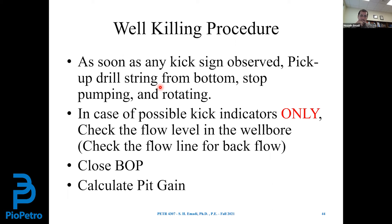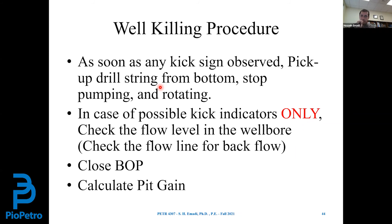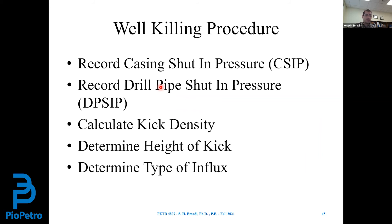After successfully closing the BOP, we check the flow line to confirm the BOP is functioning properly and sealing the annulus. Then we calculate the pit gain — how much volume of mud came back to the mud pit — which tells us how much formation fluid entered the wellbore. Then we start recording casing pressure to calculate the casing shut-in pressure. We have one gauge on the annulus — casing or choke pressure — and one at the surface on the rig floor — the standpipe pressure. When pumps are off, standpipe pressure should read zero because the float valve is closed.